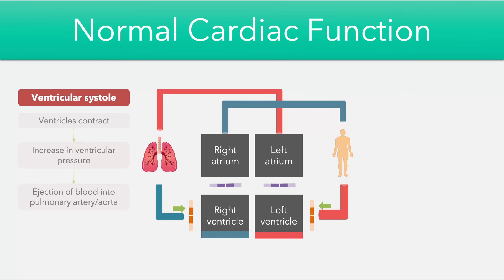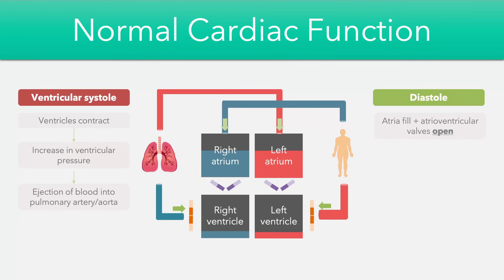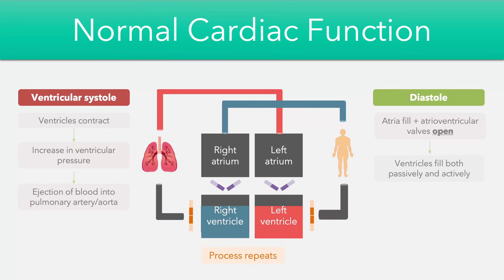Following this we have a diastolic phase, also known as the relaxation phase of the heart. New blood enters the atria and the atrioventricular valves open as a result. The blood then moves both passively and actively into the ventricles, filling them again. This forms a cycle and we've now returned to the start of ventricular systole, from which the entire process repeats.